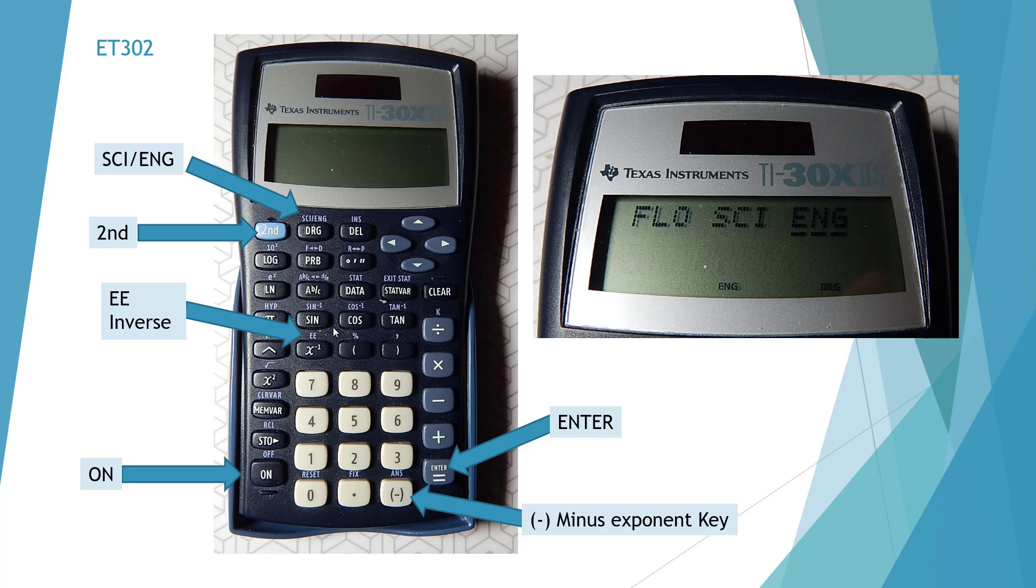Okay, and if it is a minus exponent like 10 to the minus 3, we're going to utilize this key here. This is going to modify our exponent. Do not use the subtract key. It's wrong.